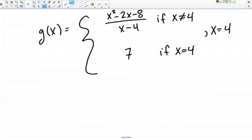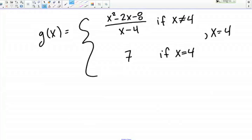Same directions here, different function, different point. So we've got the function g of x, which is also defined as a piecewise function. So g of x equals x squared minus 2x minus 8, all over x minus 4, if x is not equal to 4. But g of x equals 7, if x equals 4. And the point that I'm trying to determine the continuity at is x equals 4.